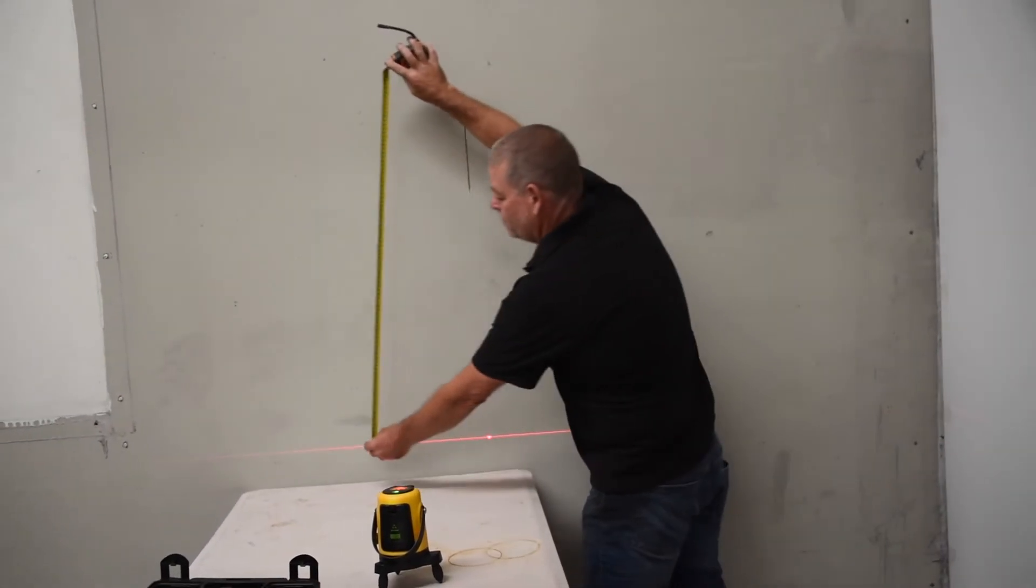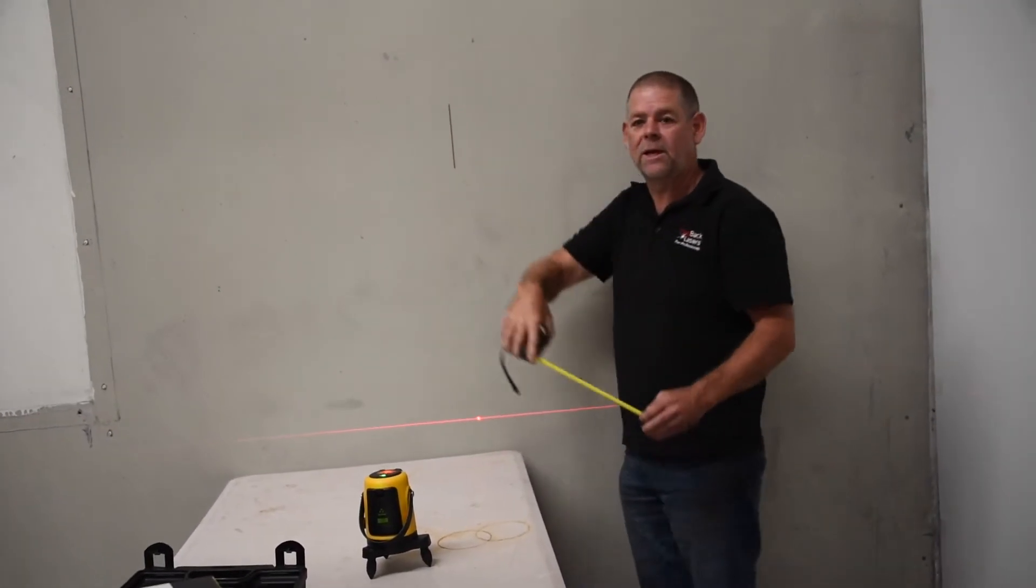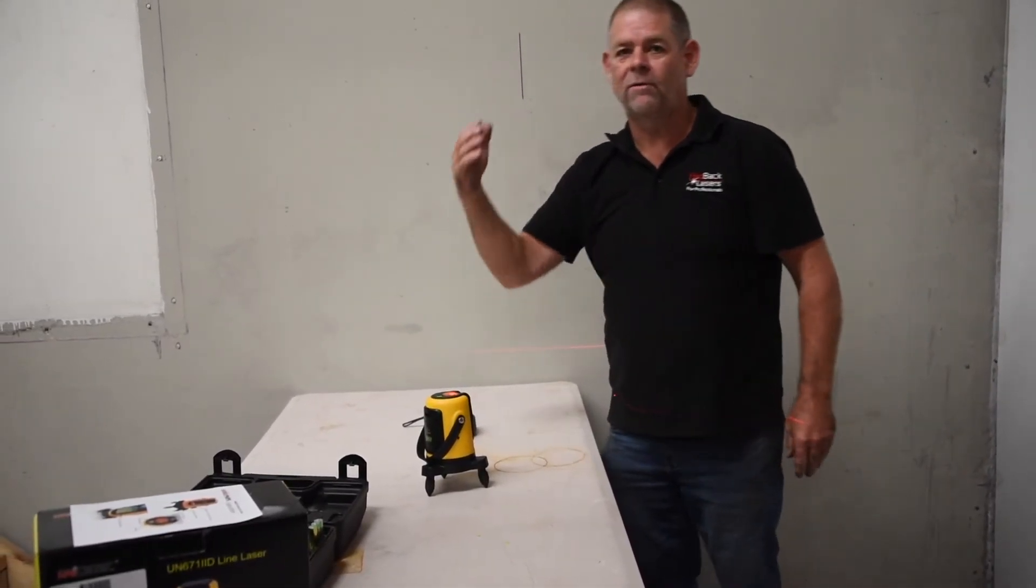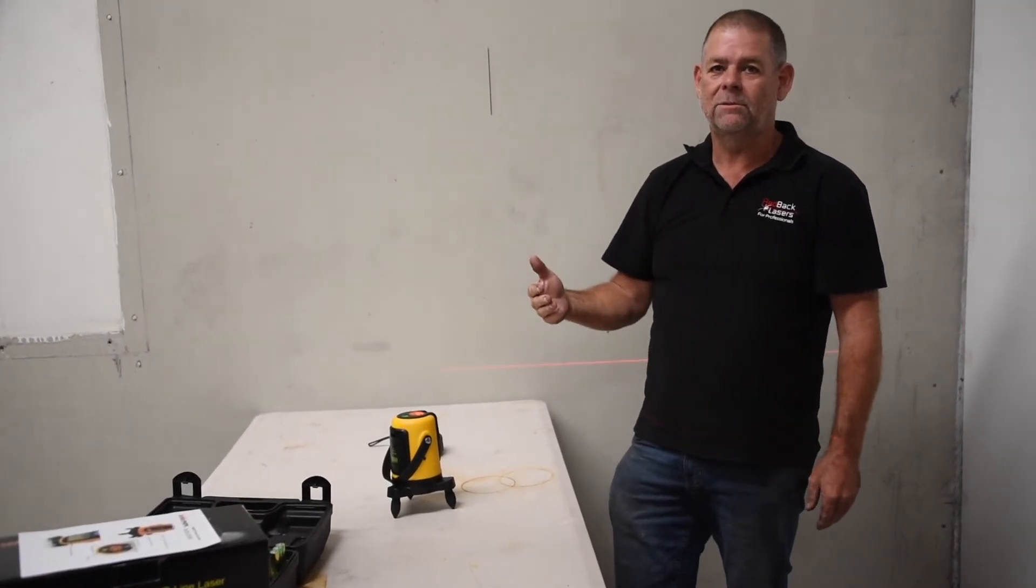And then go and measure at the other point and make sure it's the same. As I said, we can rotate that round onto the other wall or even right around the room and measure off and get the same measurements.